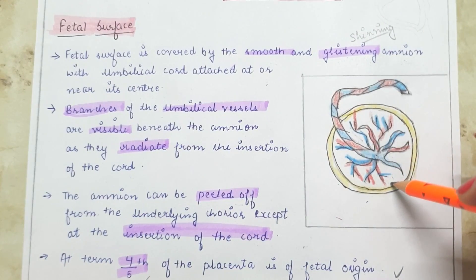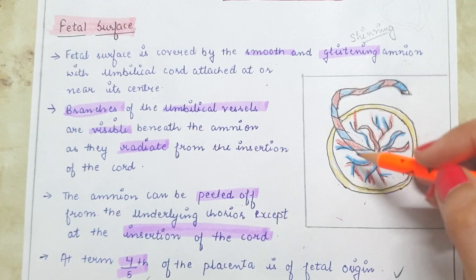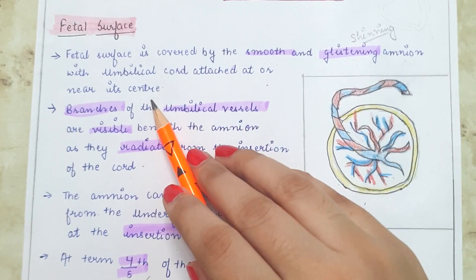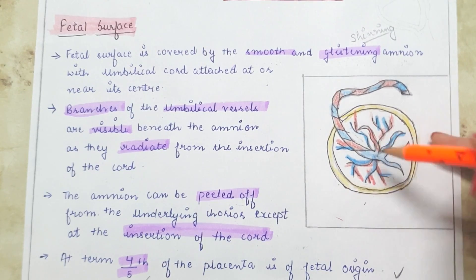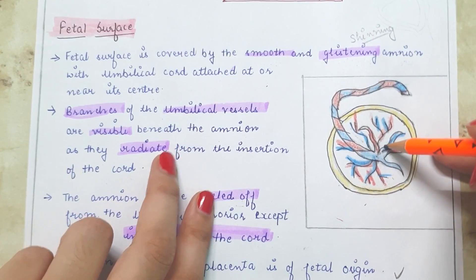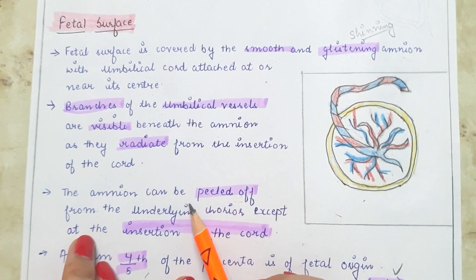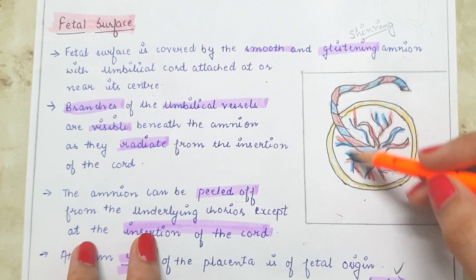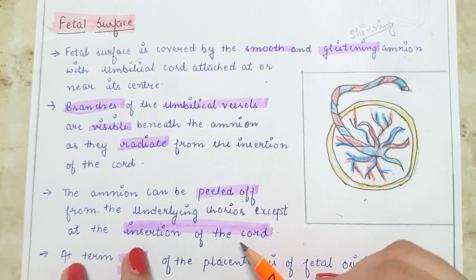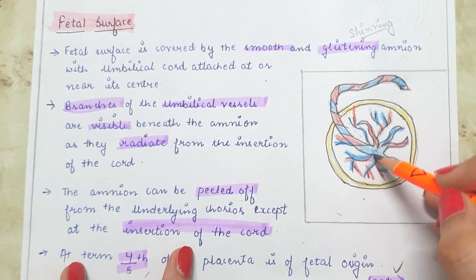The fetal surface of the placenta is covered by smooth and glistening amnion — smooth meaning an even, regular surface, and glistening meaning shining. The umbilical cord is attached at or near the center of the fetal surface. The branches of the umbilical vessels are visible below the amnion, radiating from the umbilical cord. The amnion can be peeled off from the underlying chorion, except at the insertion of the cord where it cannot be separated.